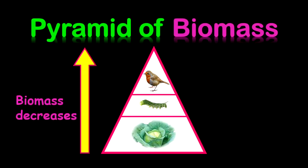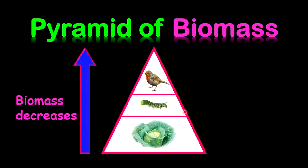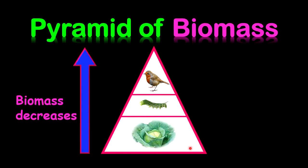Now let's look at the pyramid of biomass. The pyramid of biomass is similar to that of energy because biomass is the organic material that can be used as energy or fuel. In a typical situation, the producers will be greater than the consumers. Going up the food chain, the number of organisms typically decreases. What is producing the energy should be greater than what is consuming the energy.